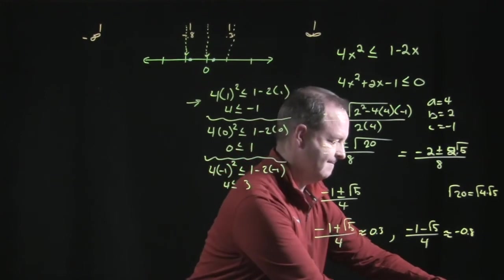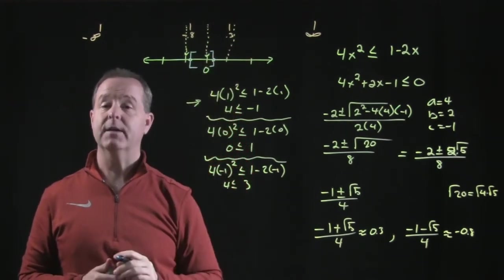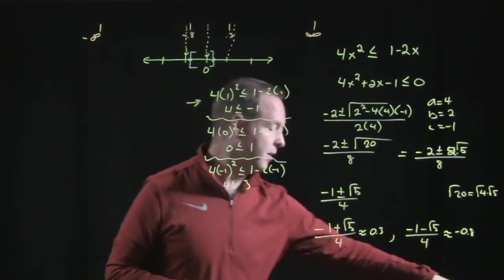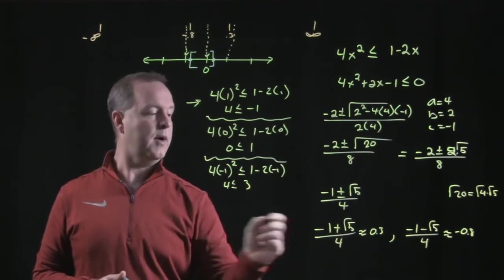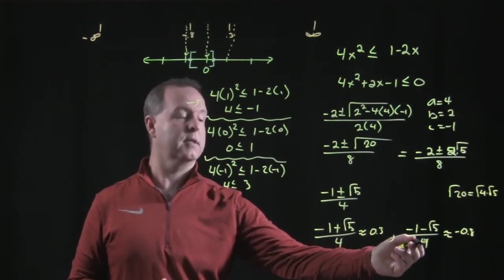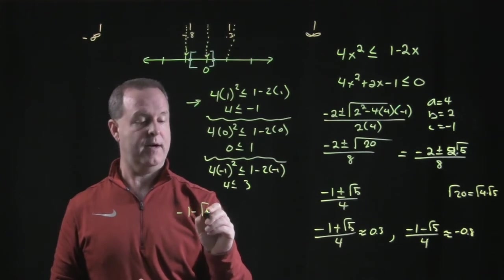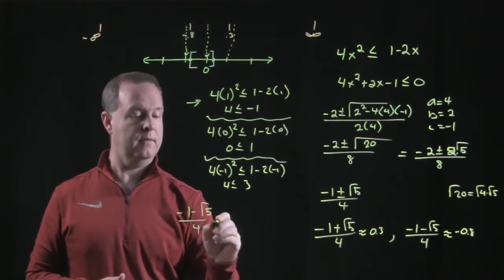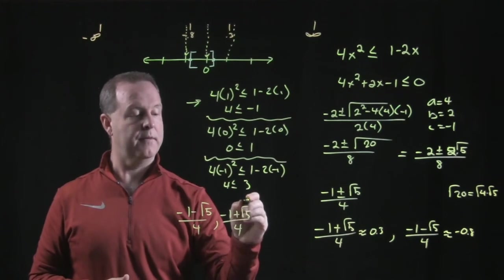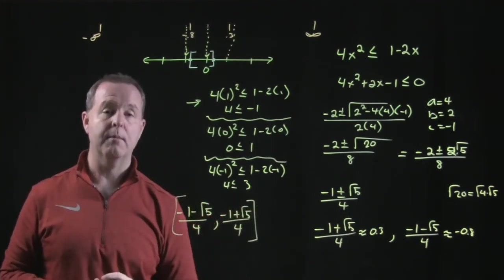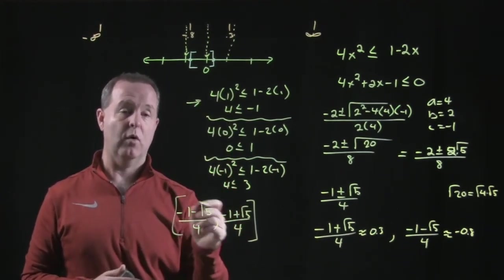So graphically then, my solution set is just that little section within there. And how would I describe that as a solution set? I would use interval notation. And that would tell me it's from negative 1 minus root 5 over 4 to the other point, which is negative 1 plus root 5 over 4. Those points are also solutions, so I will put hard brackets around that. This is representative of interval notation because it's describing a section of the graph where my solutions are at.